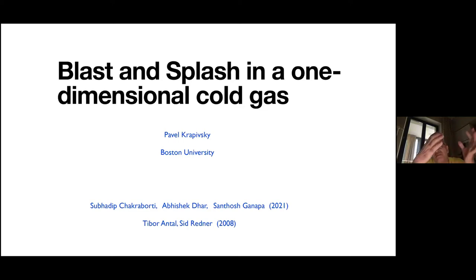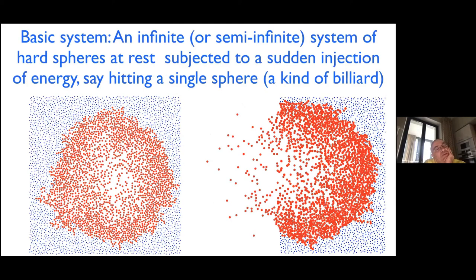We thought about a truly infinite system with billiard balls — hard spheres initially all at rest, randomly distributed with uniform density. We asked: what would happen? The system is so simple that simulations are easy, because at every moment of time only a finite number of particles are moving.